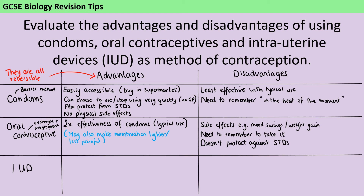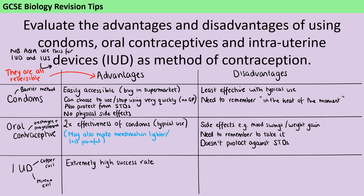Then we have intrauterine devices. It's worth pointing out that although the NHS distinguishes between an IUD (the copper coil) and an IUS (the plastic Mirena coil), AQA uses the term IUD to refer to both — as seen in a 2018 question that talked about copper coils and plastic coils and called them both IUDs. The first big advantage of the IUD is that it has an extremely high success rate, far higher than any of the other contraceptive methods. Part of the reason is that once inserted, the copper coil doesn't need to be worried about for the next 10 years, and even the Mirena coil lasts five years — so you're protected with that really effective contraceptive.